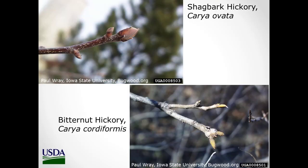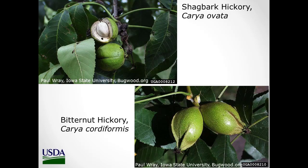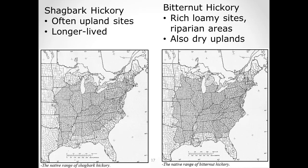I find so much more bitternut hickory coming in as an early successional species. They grow on different types of sites often. Of course, their seeds are different: shagbark is your coveted hickory nut, while bitternut is still valuable to animals and for hickory nut oil, but not as coveted for human consumption.